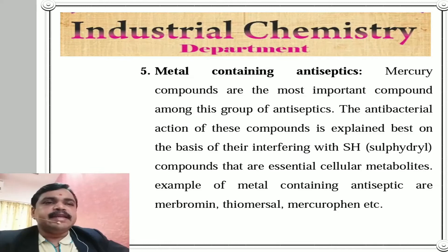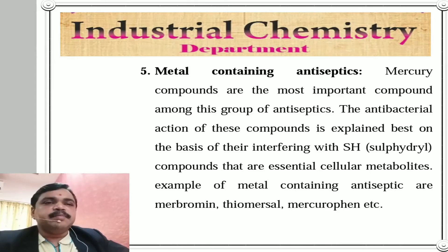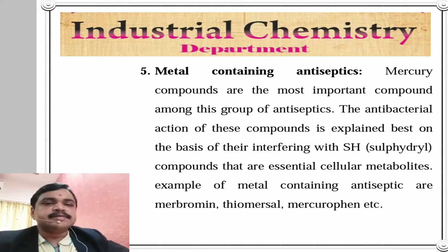Number five, metal-containing antiseptics. Mercury compounds are the most important in this group. Their antibacterial action is explained based on their interference with SH (sulfhydryl) groups, which are essential cellular metabolites. Examples include merbromin, thiomersal, mercurofin, etc.